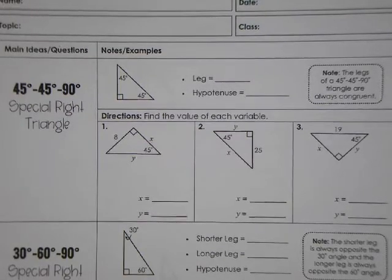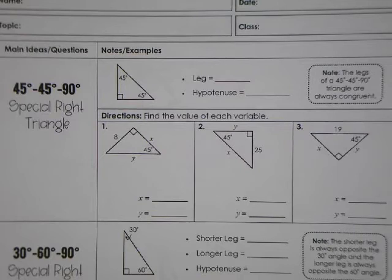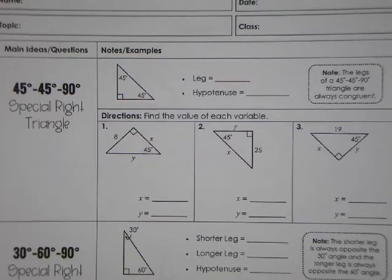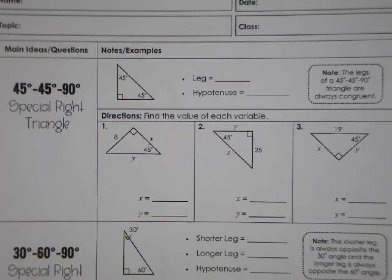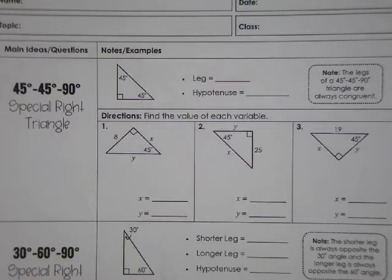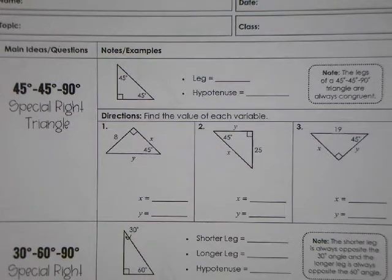Hey there, this is Mr. Peercy and what I'm going to be talking about in this video is how to come up with the rules for what are known as special right triangles and then how we use those rules to evaluate a right triangle to find lengths of its sides. Special right triangles are important in mathematics and you're first introduced to them in your high school geometry curriculum. They lay the foundation for things in trigonometry, specifically for something known as the unit circle.